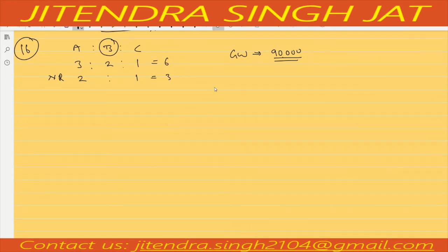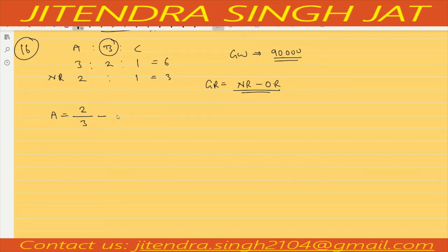Again we need to calculate gaining ratio. The formula is new ratio minus old ratio. For A: new ratio is 2/3, old ratio is 3/6. Taking LCM 6: (2×2=4) minus (1×3=3) = 1/6. So this is the gaining ratio of A.